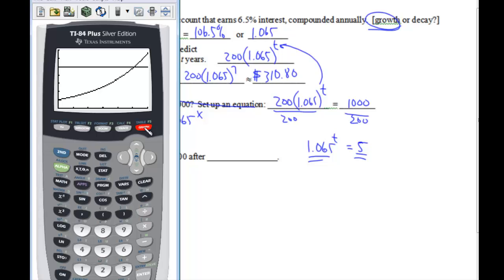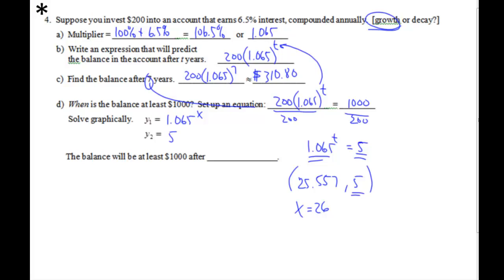We need to figure out when are these equal? They're equal at this intersection. So if I find the intersection by calculation, we get X equals 25.557 comma 5. Y equals 5, and that's X, so X comma 5, so X equals approximately 26 years. So what this means is the balance will be at least $1,000 after approximately 26 years. That's one way of solving it.